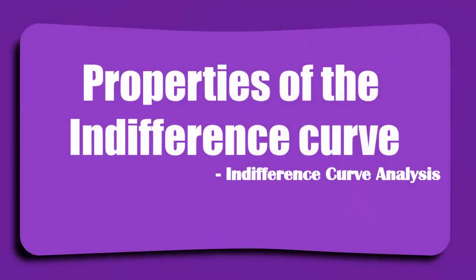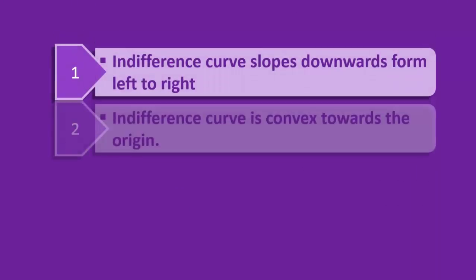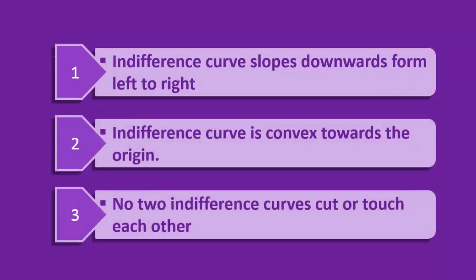Properties of the Indifference Curve: Indifference curve slopes downwards from left to right. Indifference curve is convex towards the origin. No two Indifference Curves cut or touch each other. Well, these are the three important properties of the Indifference Curve.